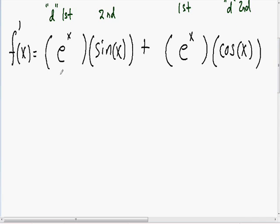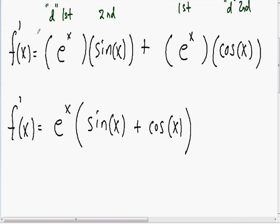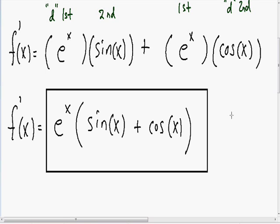Notice that we have two terms: e to the x multiplied by sine of x, and e to the x multiplied by cosine of x. Both terms have an e to the x in common, so the only thing we can do to simplify is factor out an e to the x. Factoring that out, we're left with e to the x times the quantity sine of x plus cosine of x. Now we have simplified this as much as possible and completely taken the derivative of this function using the product rule.